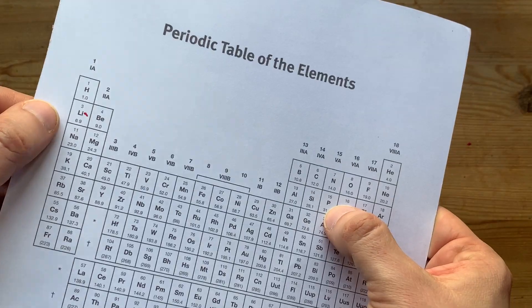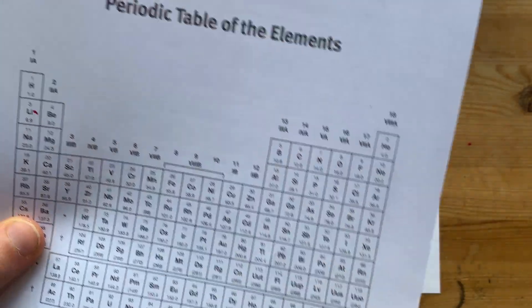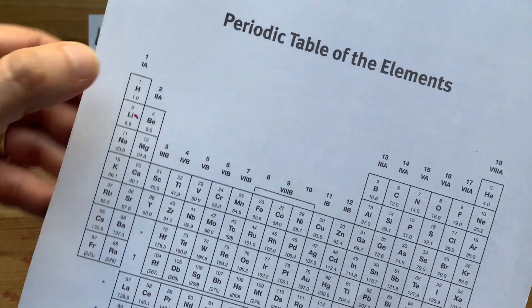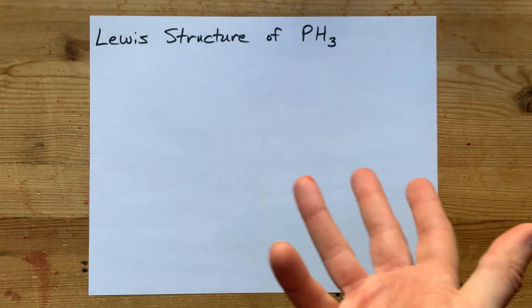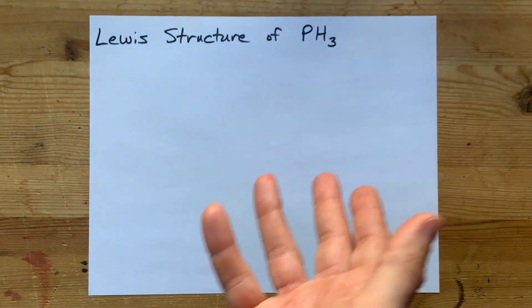Now the first thing to note is that phosphorus is a non-metal. It comes from the right-hand side of the staircase on the periodic table. Hydrogen is also a non-metal. It's something you just got to know. I know it's written over here, but it's a non-metal.